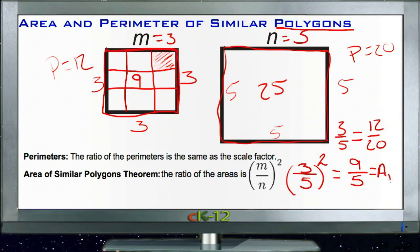So the area ratio is going to be nine out of 25. Sorry, five squared is 25. It can be nine out of 25 instead of three out of five.